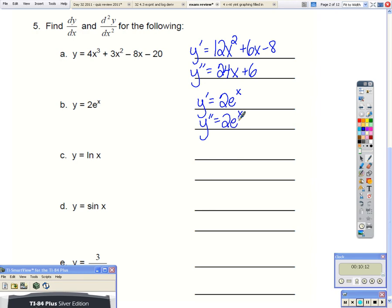Okay, for c, derivative of ln of x is 1 over x. I'm going to rewrite that as x to the negative 1 to help me do the second derivative. Use the power rule. But then I'm going to rewrite that with a positive exponent.